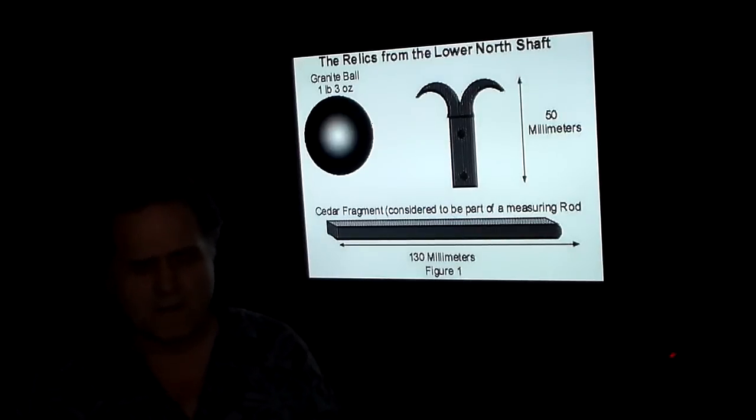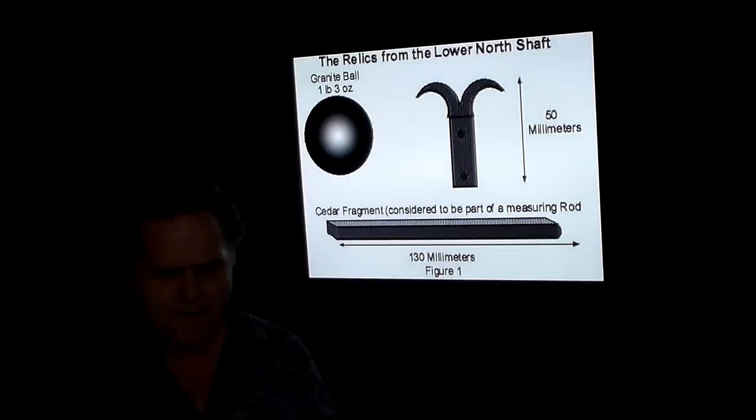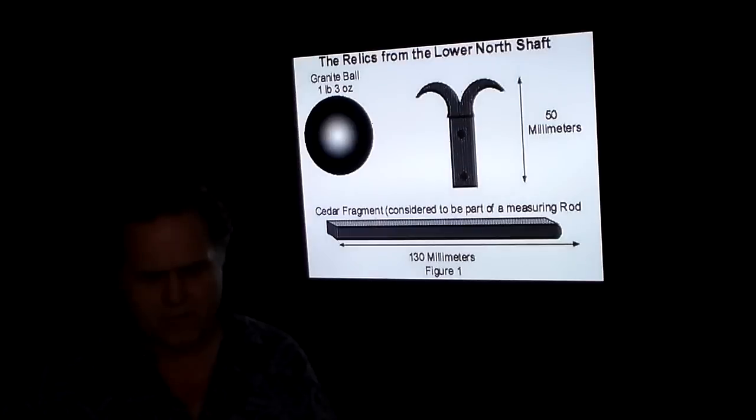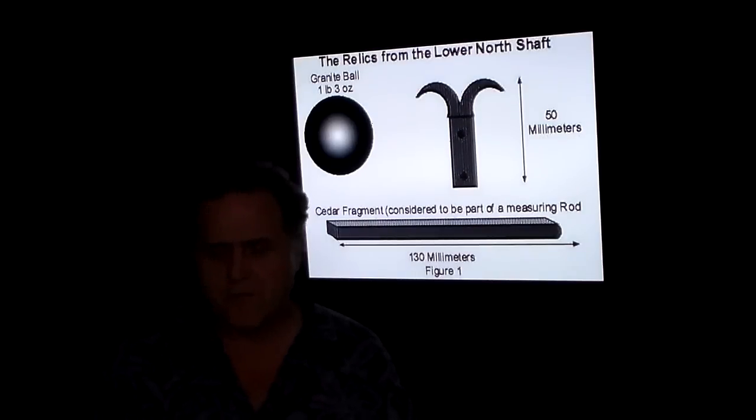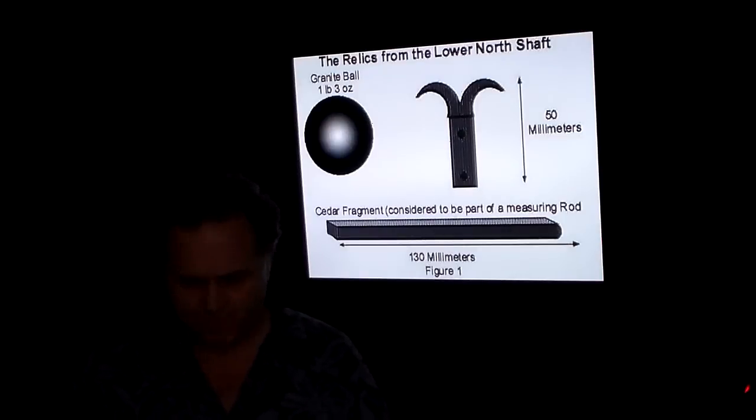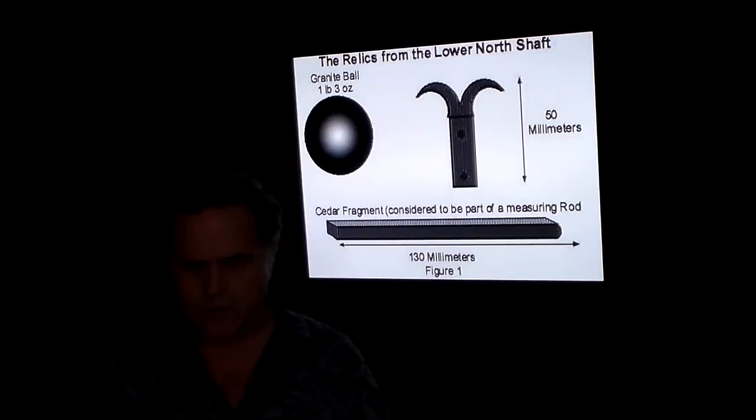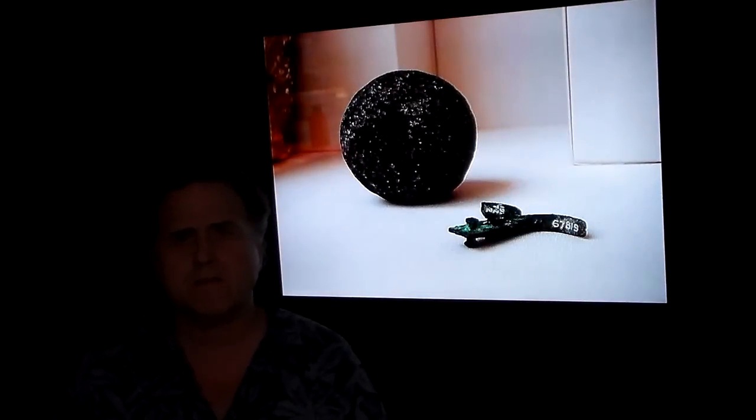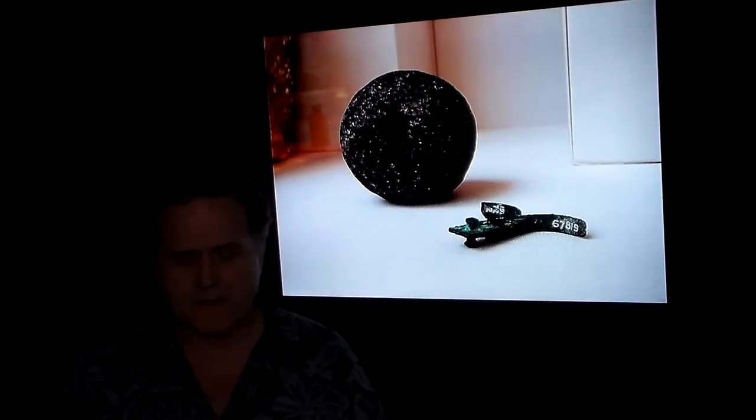The relics from the lower north shaft: you got the granite ball, I think it's three to four inches in diameter. You got the grappling hook that's 50 millimeters long and the ball weighs one pound three ounces. And then a piece of cedar fragment considered to be part of a measuring rod of some sort. This was found by Dixon and brought back to the old country. Here's the stone ball.